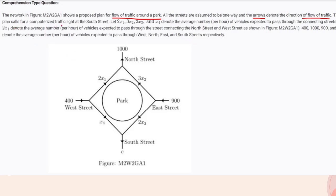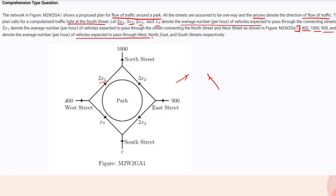This proposed plan involves traffic on the west, east, north, and south streets. The variables x1, x2, x3, and x4 denote the average number of vehicles expected to pass through each connecting street. The values 400, 1000, 900, and c denote the average number of vehicles expected to pass through the west, north, east, and south streets respectively.